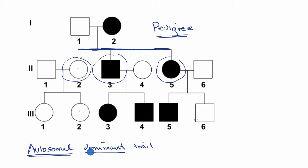And if a trait is autosomal dominant, that means that if you have even just one allele for that trait, that you are going to exhibit the trait.